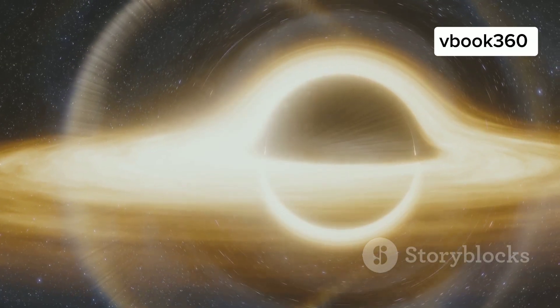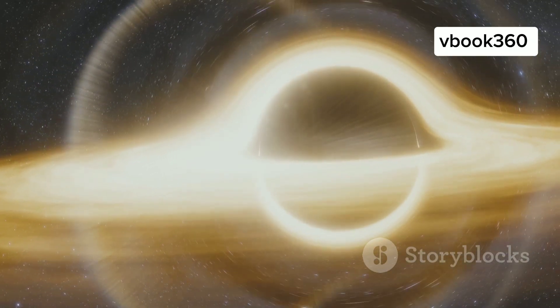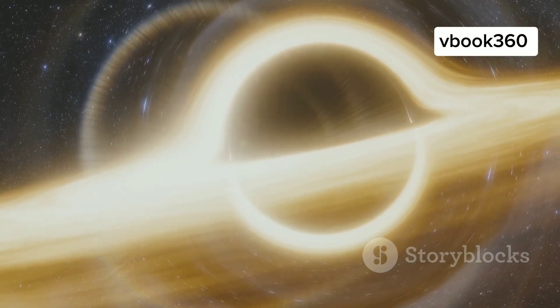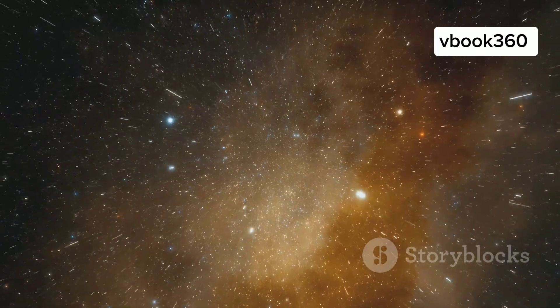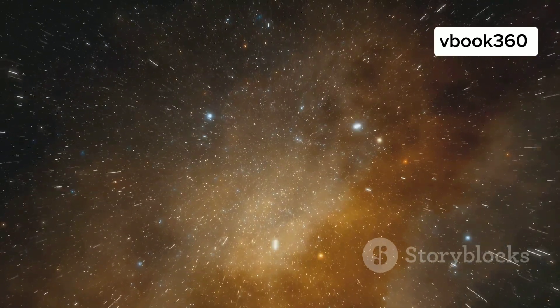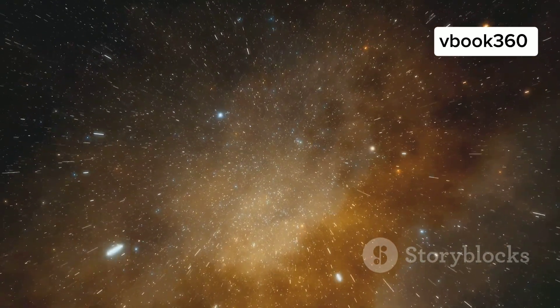Imagine a ring so large that it takes light, traveling at an incredible speed, millions of years to cross its diameter. Light, which moves at approximately 186,000 miles per second, would need millions of years to traverse this immense structure. This gives us a sense of the staggering scale of the galaxy ring.